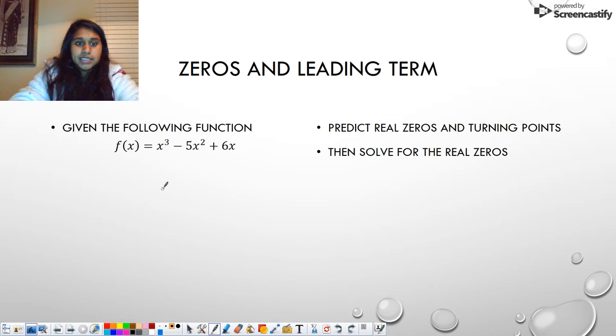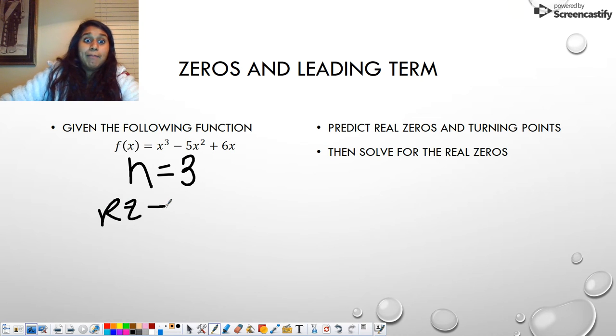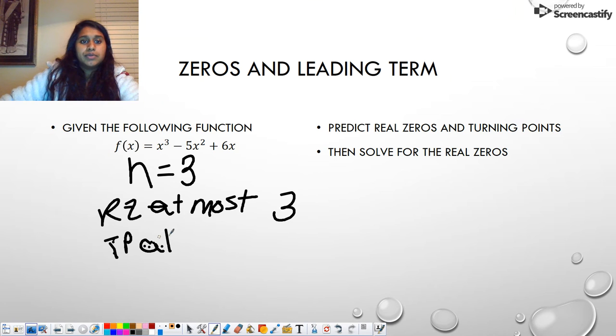So that tells me for this question n equals three. So that means my real zeros at most, right? At most, I have three real zeros.